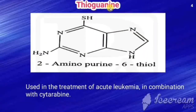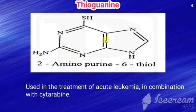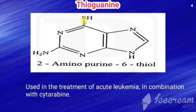The next drug is 6-thioguanine (thioguanine). It has a purine nucleus consisting of pyrimidine and imidazole rings. The structure of guanine has an NH2 group at the second position and a hydroxy group at the sixth position. In 6-thioguanine, that hydroxy group is replaced by an SH group — so it is called 6-thioguanine.